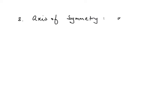The axis of symmetry is found by adding the two roots together and dividing by 2. One root was at 1 and one was at 3 — those are the x-intercepts. We add them together and divide by 2: that gives 4 over 2, which is 2. So x equals 2 is the equation of the axis of symmetry — a vertical line at x equals 2.